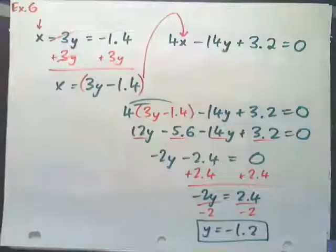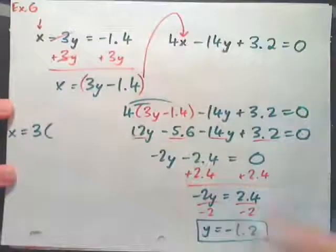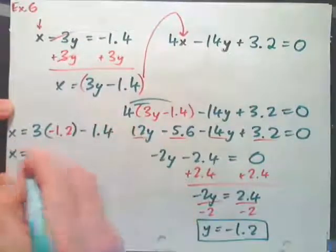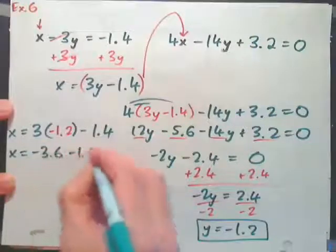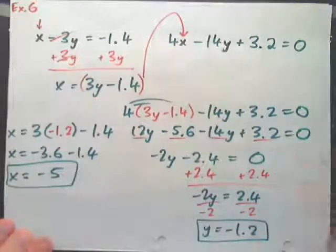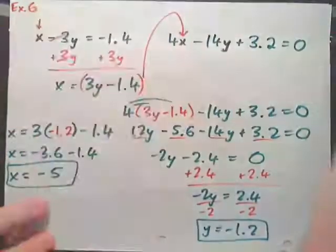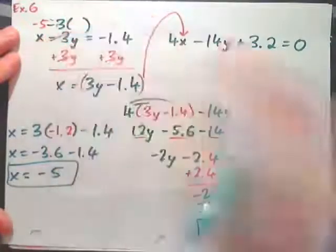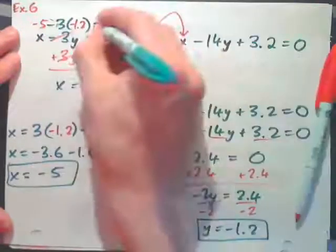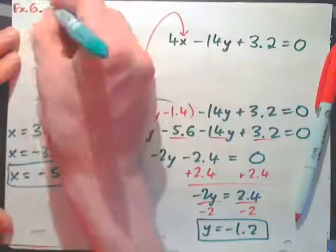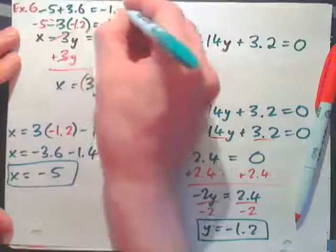Now find x using x equals 3y minus 1.4. Plug in negative 1.2: x equals 3 times negative 1.2 minus 1.4, which is negative 3.6 minus 1.4, so x equals negative 5. To check, substitute negative 5 for x and negative 1.2 for y in the first equation: negative 5 plus 3.6 equals negative 1.4. Correct.